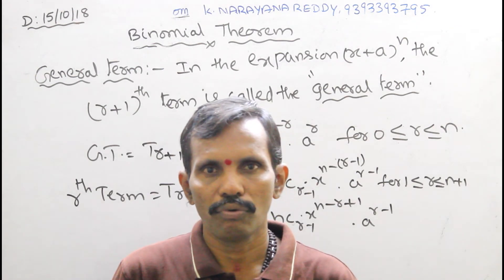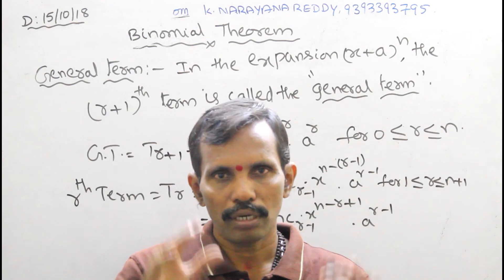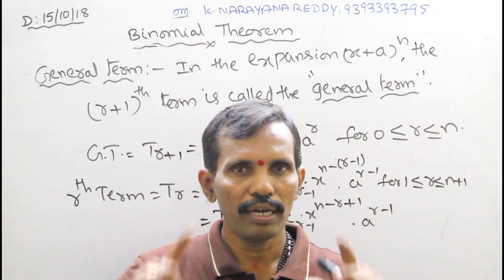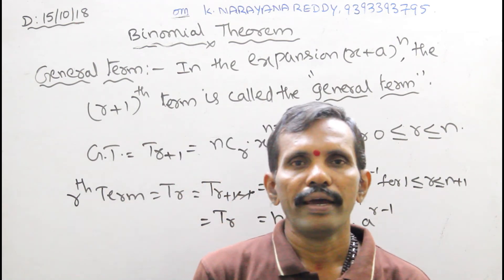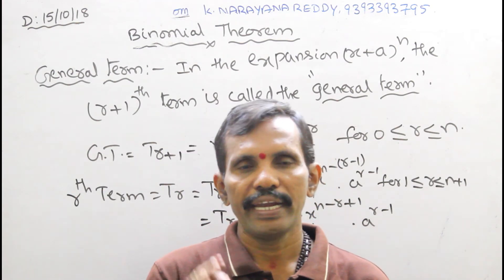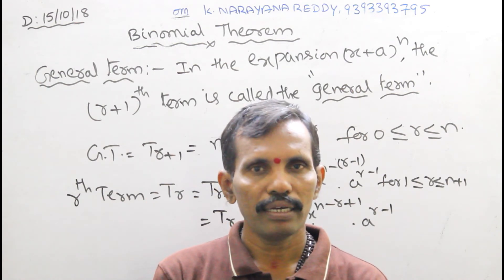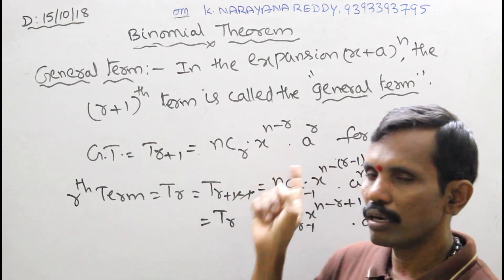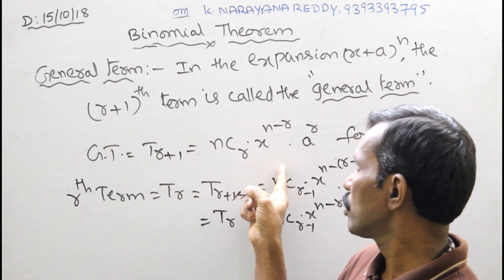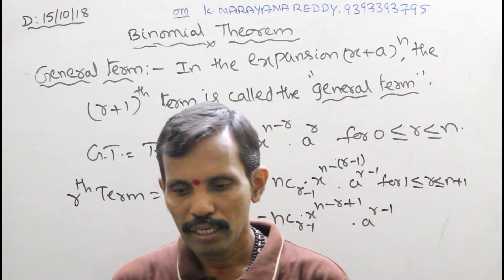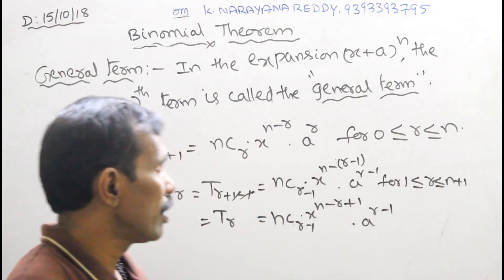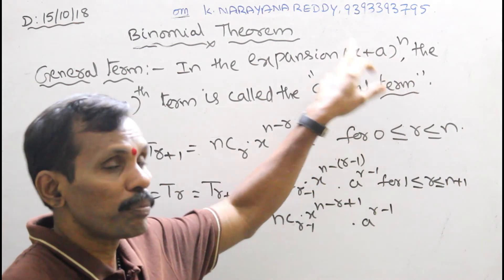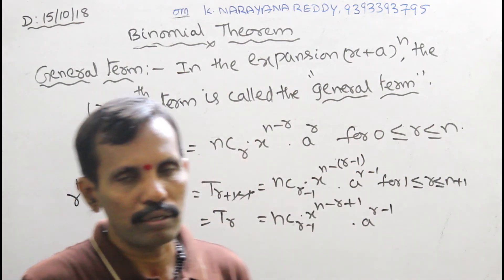Dear friends, what you have learned about binomial theorem? Three simple steps: first, binomial means plus or minus; second, if the index is n, the number of terms is n plus 1; third, the general term is T sub r plus 1 equals nCr times x to the power of n minus r times a to the power of r, where x and a are real numbers and n is a positive integer. This formula also applies when x minus a whole to the power of n is there — only the signs change.